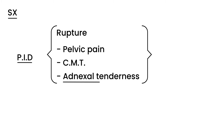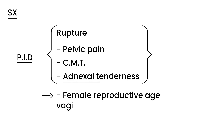One key thing to look for: you should suspect ectopic pregnancy in any female of reproductive age who has these symptoms but also has vaginal bleeding. Another important clue is if she does not know when her last menstrual period was. Those are the key features that differentiate pelvic inflammatory disease from ectopic pregnancy.